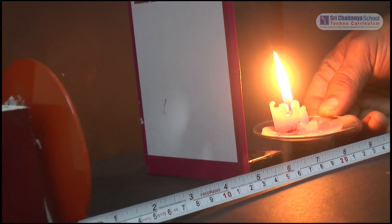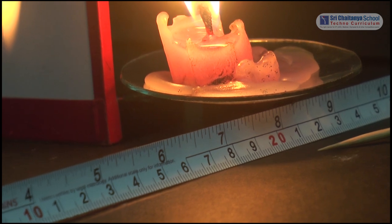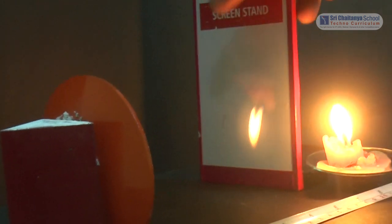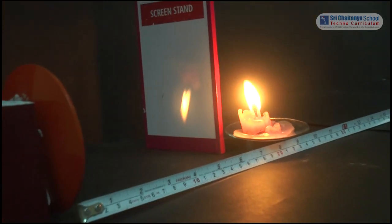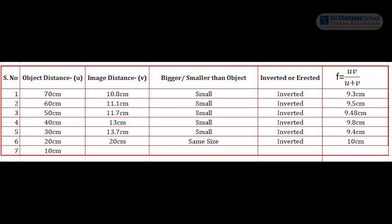Now place the object at the 20 cm mark. By adjusting the screen, we will get an image on the screen. Here, the image is formed at 20 cm. By tabulating object distance 20 cm and image distance 20 cm, we get the focal length as 10 cm. You might have observed that as the object comes closer and closer, the image size becomes bigger. When it reached 20 cm, the image also reached 20 cm, meaning the image is almost equal to the size of the object.